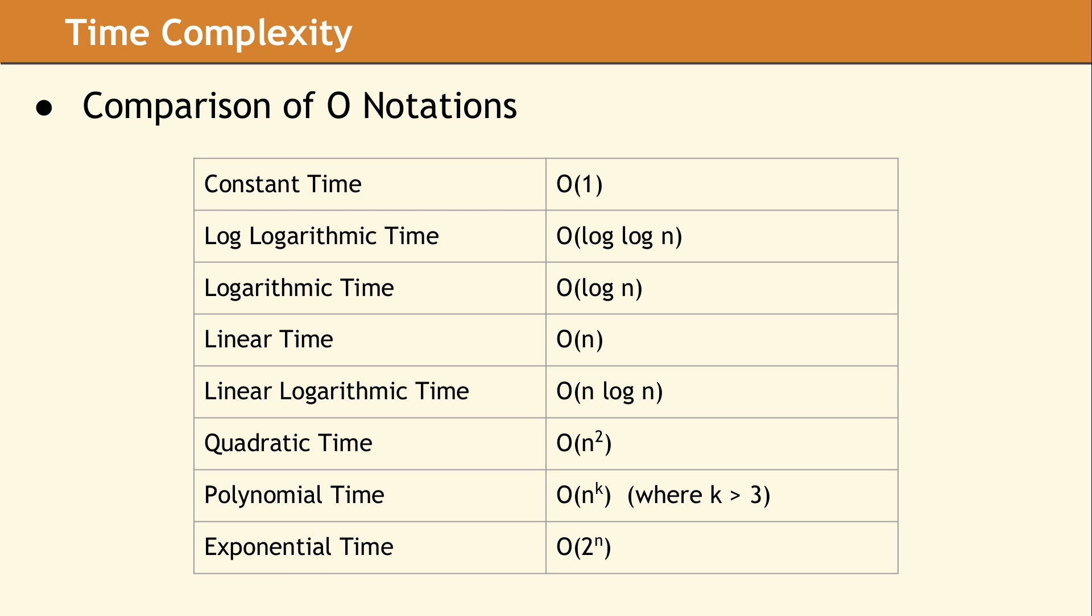An example of exponential time complexity would be the algorithm to determine the best move in a game of chess. So whenever you can, select an algorithm which will have a running time as high up on this list as possible.